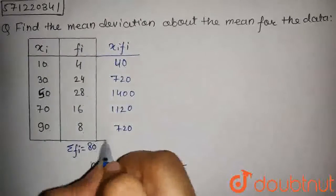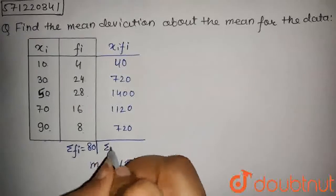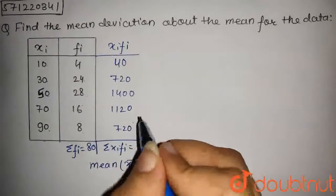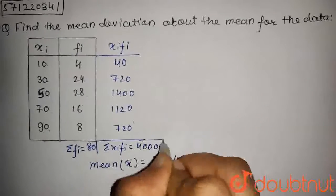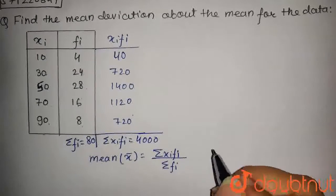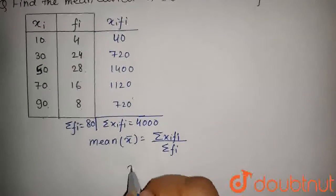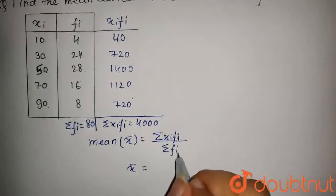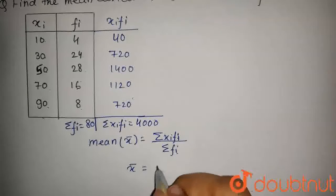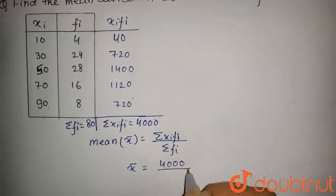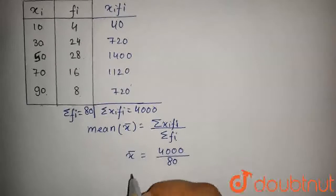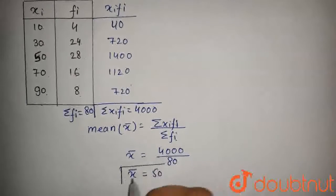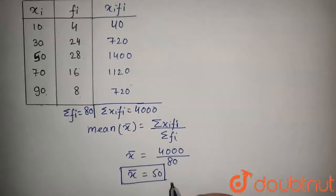Now, the summation of xᵢfᵢ will be the sum of all these terms. Summation of xᵢfᵢ is 4000. So the mean, x̄, equals summation xᵢfᵢ upon summation fᵢ. Putting in the values, we get 4000 upon 80. On solving this, x̄ equals 50. This is the mean of the following data.